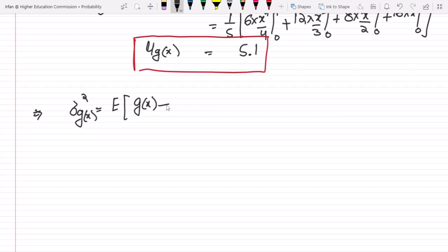As I previously told you, it would be the integral from 0 to 1 of g of x minus mu g of x squared times f of x dx.